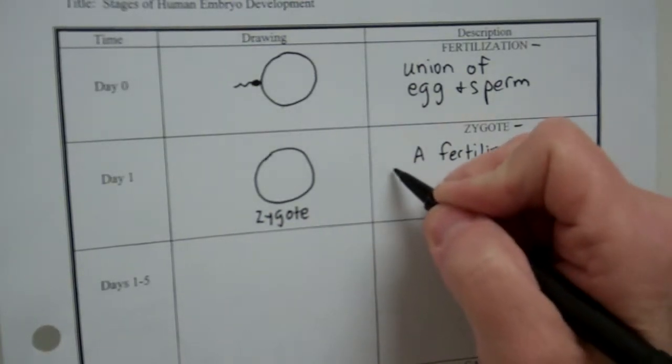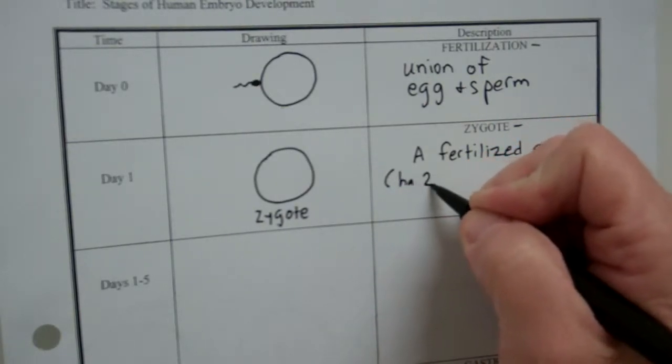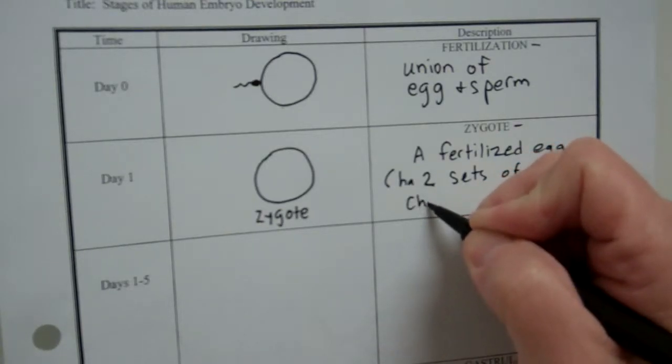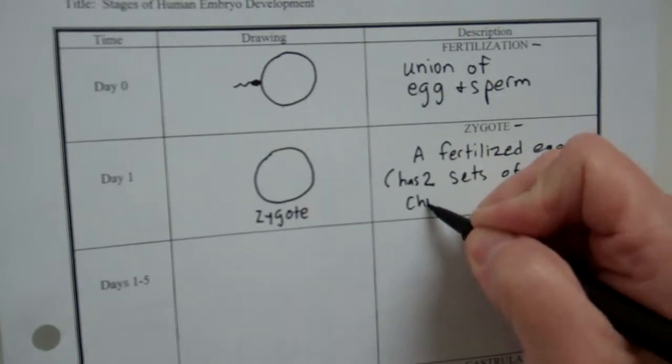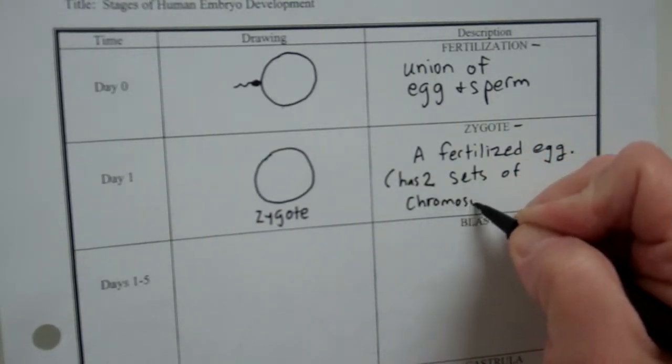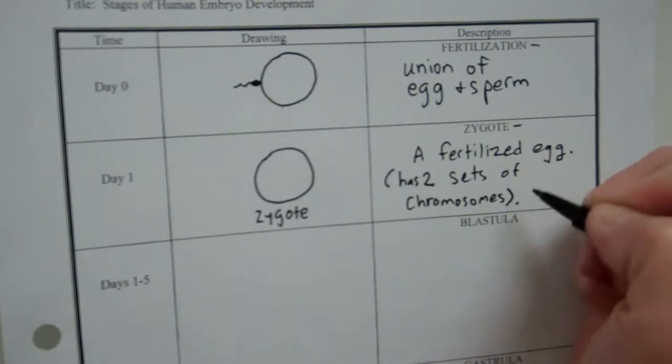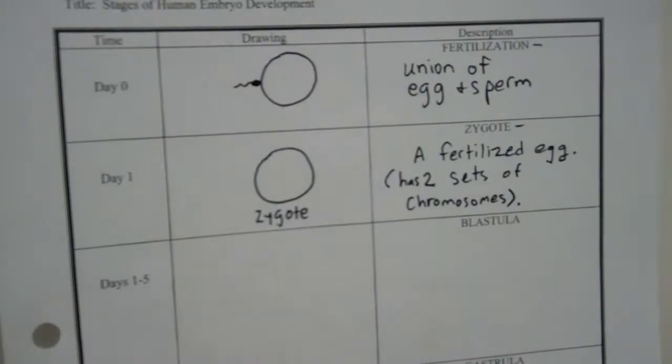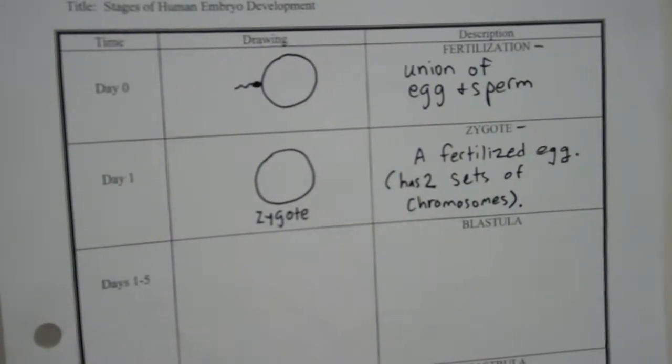Now, remember, it has two sets of chromosomes. All right. Now, that zygote is going to start dividing by mitosis. Cell cycle.